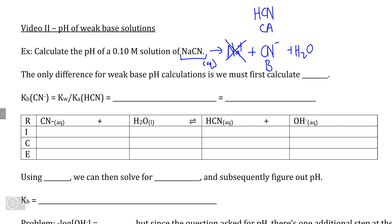The problem with Kb calculations is that we aren't actually given Kb in a data table because most Keq values for acids and bases are listed in their Ka form. This means we actually need to calculate Kb by remembering the relationship that Ka times Kb of a conjugate pair is equal to Kw, which is 1 × 10⁻¹⁴.